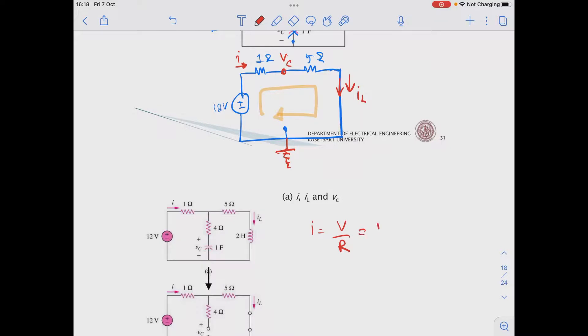And the voltage is equal to 12. And the resistance will be 1 plus 5, which is 6. So we have I equal to 2 amperes.